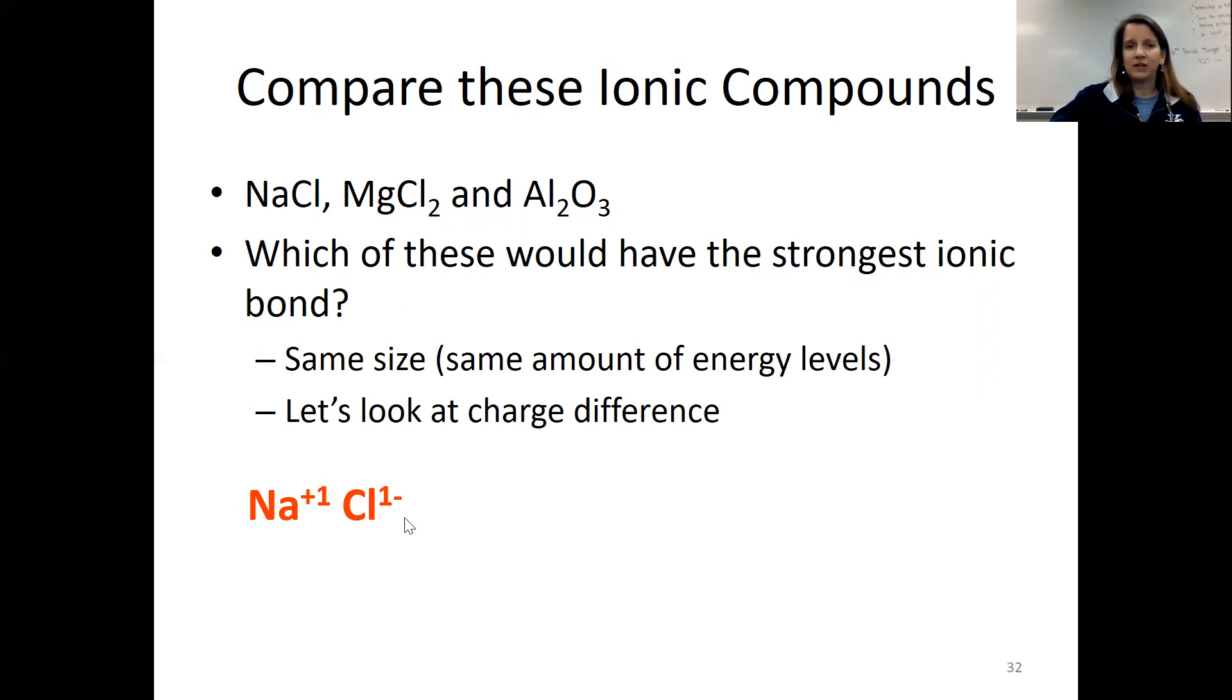So NaCl is formed from Na+1 and chlorine -1. MgCl2 is formed from Mg+2 and chlorine -1. And Al2O3 is formed from Al+3 and O-2. That's the biggest charge difference.